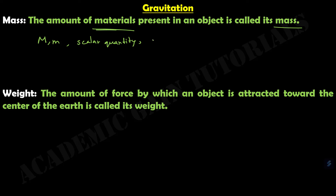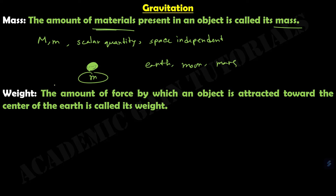Another property of mass is that mass is space independent. Wherever it is taken, it remains the same. Suppose an object of mass M is taken on the Earth, Moon, or Mars — the value of M will always be the same; it will not change at different places. Mass is not affected by temperature, magnetic field, electric field, or similar factors.